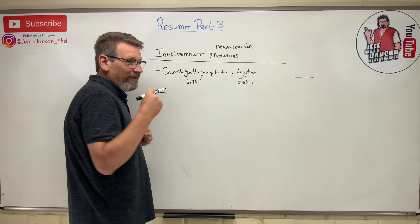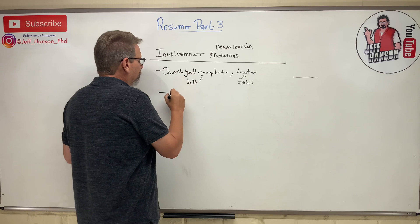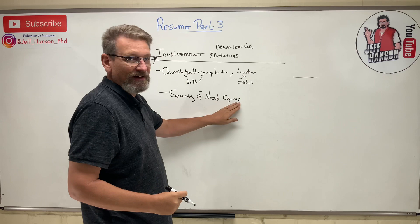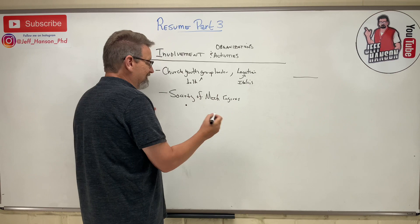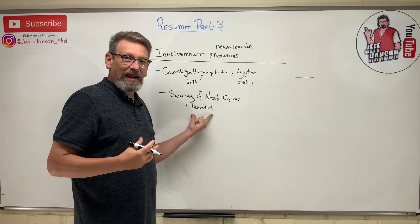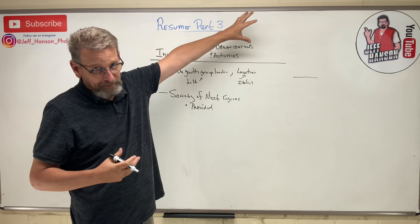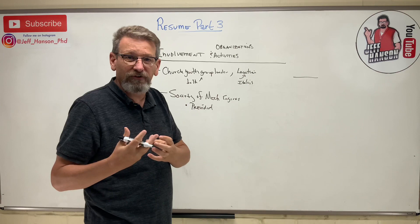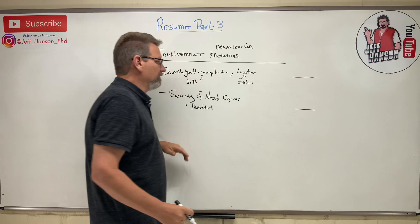For school activities, recruiters love to see leadership. For example, if you list the Society of Mechanical Engineers, underneath that you might have a bullet point saying you were president, activities chair, or whatever role you held. That tells me you had a leadership role in that organization while also managing your classes — a real way to show you can handle more than one thing at a time. Leadership positions are important to recruiters and companies.